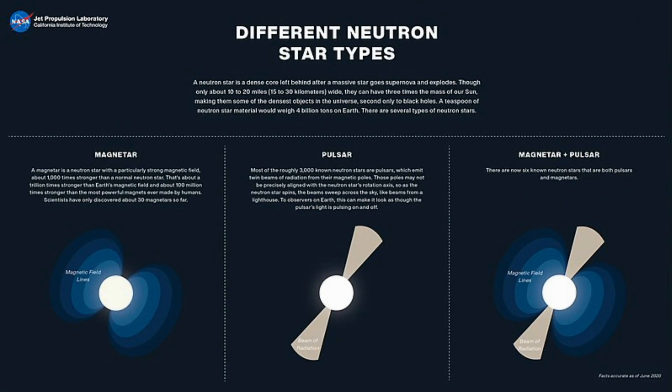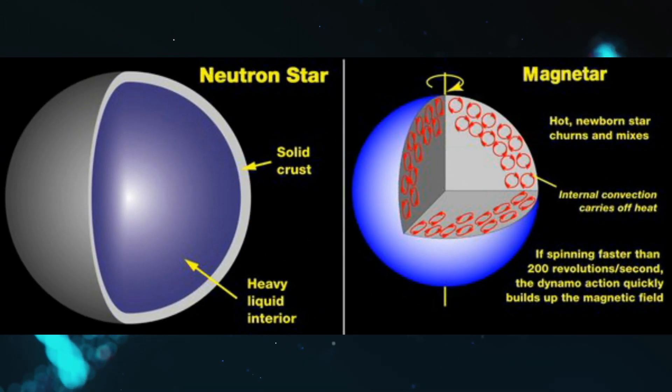Next we're gonna talk about magnetars. Magnetars are neutron stars with extremely powerful magnetic fields, trillions of times stronger than Earth's magnetic field. The magnetic field decay powers the emission of high energy electromagnetic radiation, particularly X-rays and gamma rays. The existence of magnetars was proposed in 1992 by Robert Duncan and Christopher Thompson.